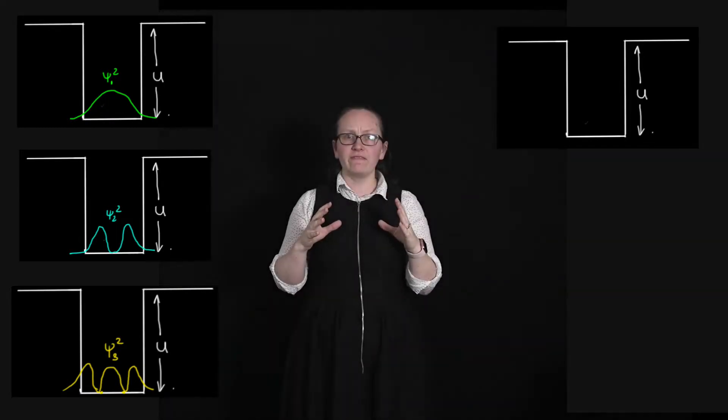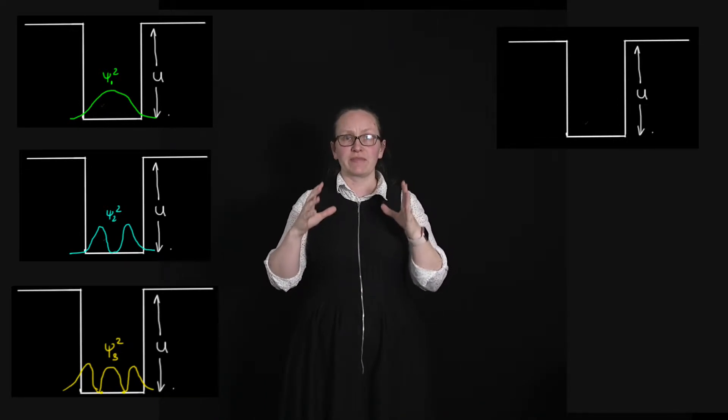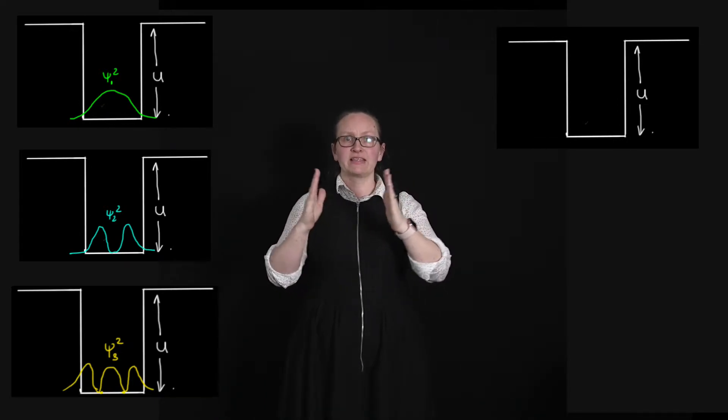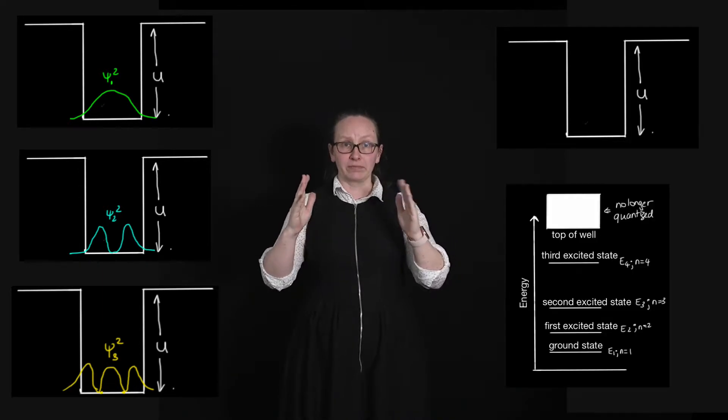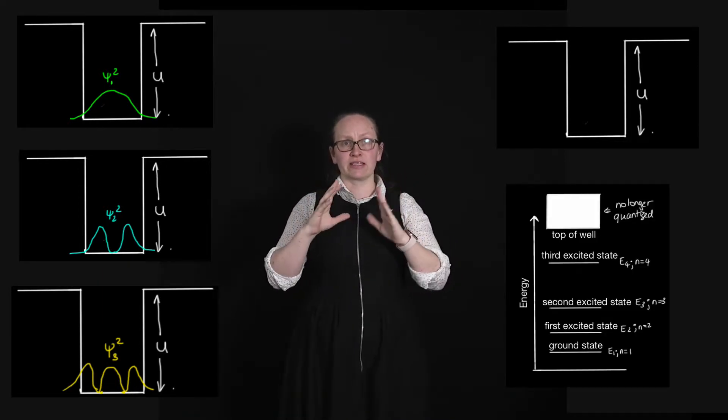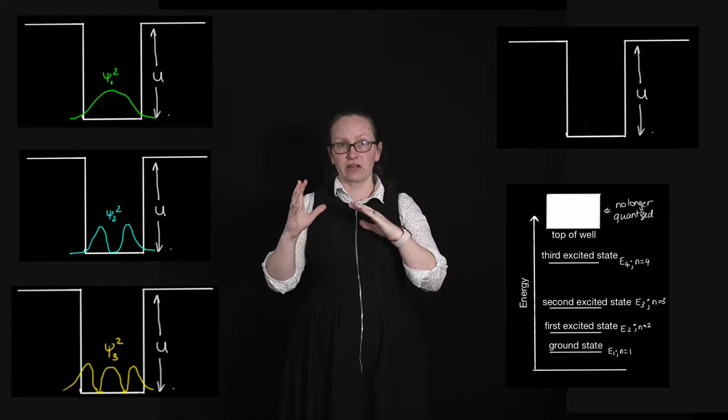So the wave function for the electrons trapped in the finite well extends out into the barriers of the well a little bit and as a result it means that the wavelength is slightly longer.